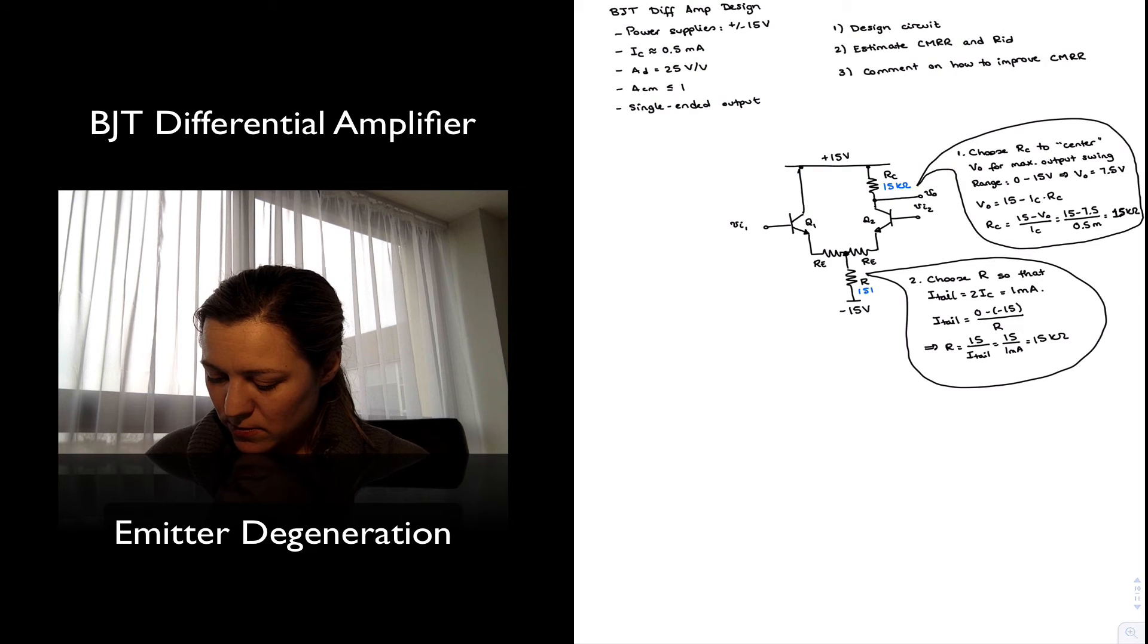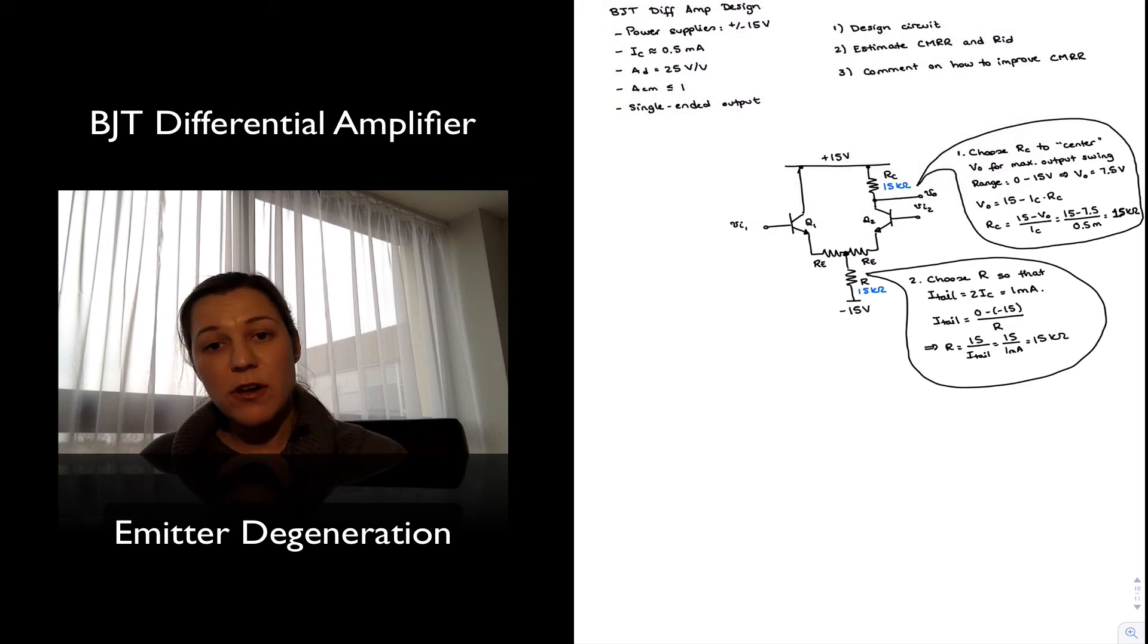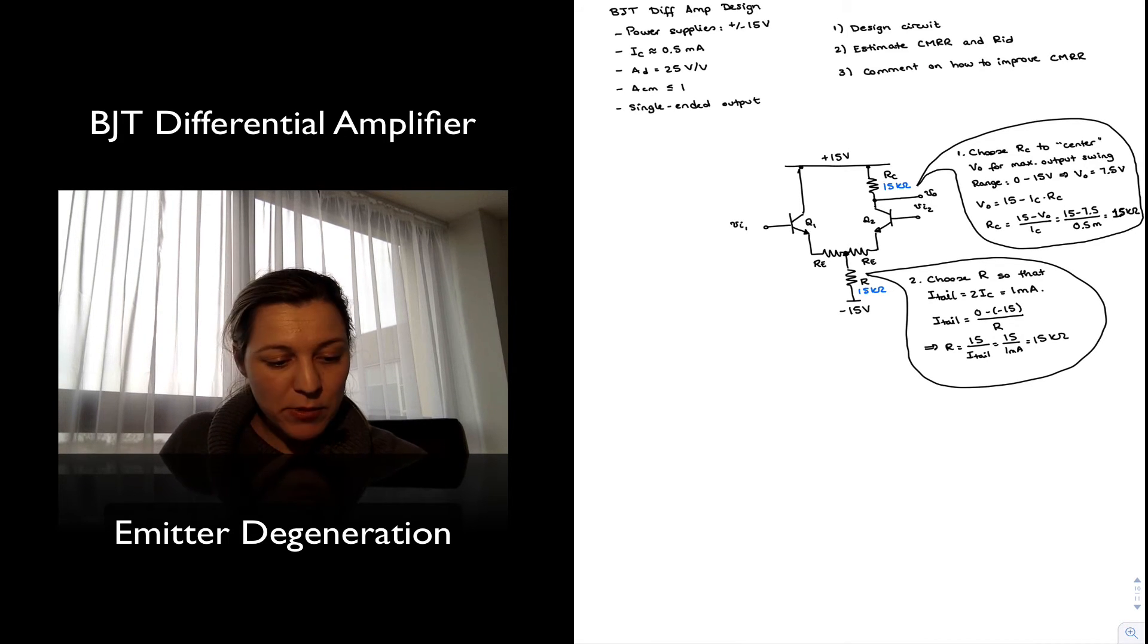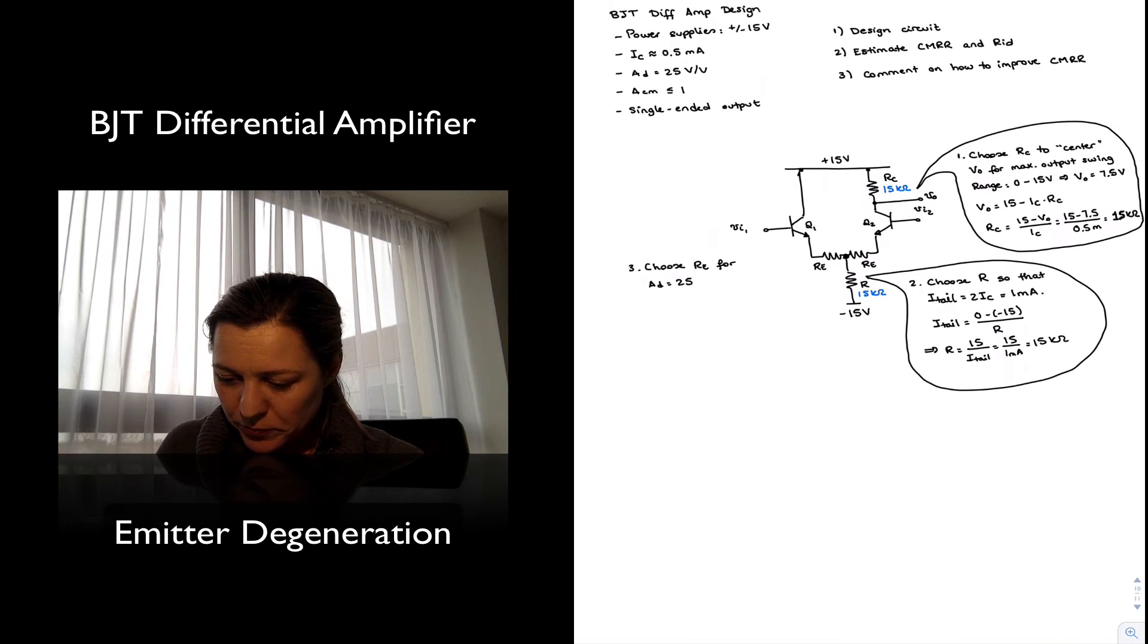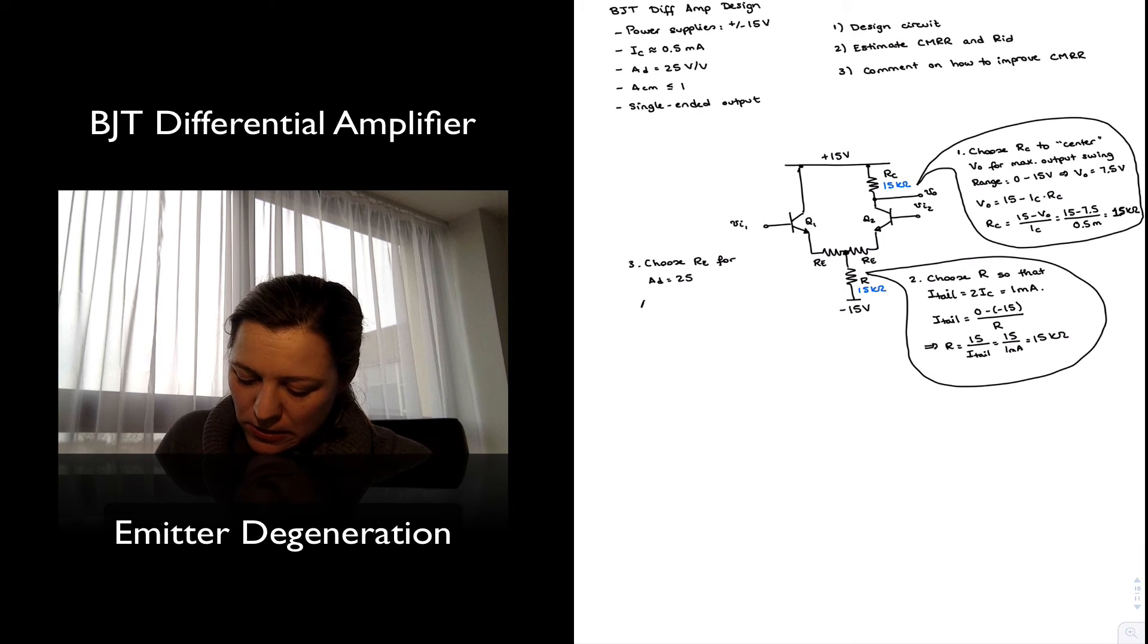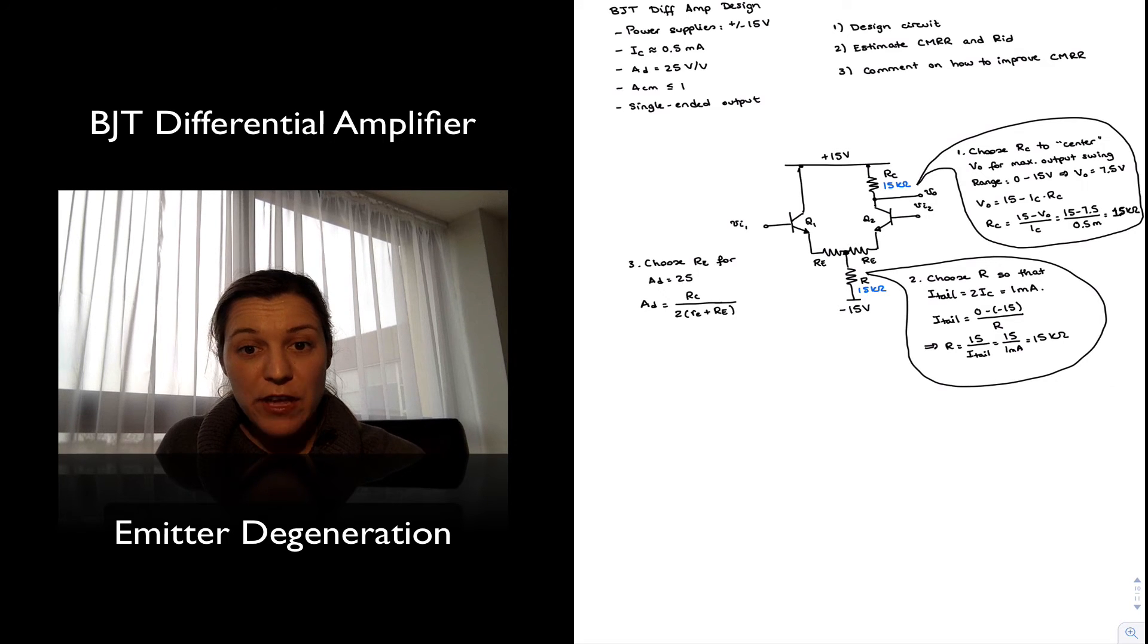And the last thing that I have to do is figure out the value of my RE resistors, my emitter resistors, in order to set my differential gain to the right value, 25 volts per volt. And that's going to be step number three. Step number three will be select or choose my RE values for the correct differential gain. So for AD equal to 25. Since this is a single ended output differential amplifier, my differential gain is going to be equal to RC divided by two times the overall emitter resistance, two times little re plus capital RE. As it is one half of the gain for the differential output.